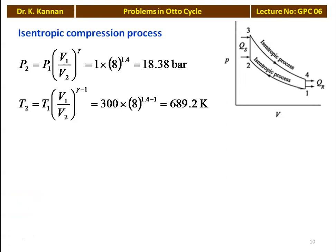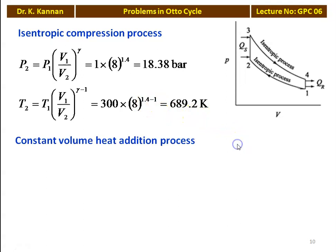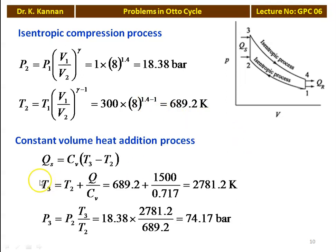For isentropic compression: P2 equals P1 × (V1/V2)^gamma equals 1 × 8^1.4 equals 18.38 bar. T2 equals T1 × (V1/V2)^(gamma-1) equals 300 × 8^0.4 equals 689.2 Kelvin. For constant volume heat addition: Qs equals Cv × (T3 - T2), so T3 equals T2 + Q/Cv equals 689.2 + 1500/0.717 equals 2781.2 Kelvin. P3 equals P2 × T3/T2 equals 18.38 × 2781.2/689.2 equals 74.17 bar.